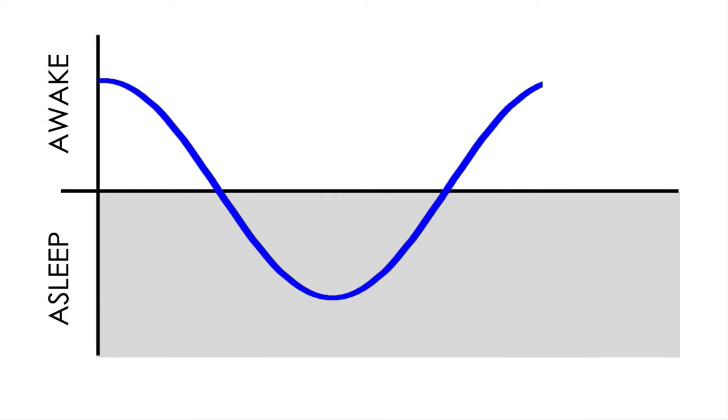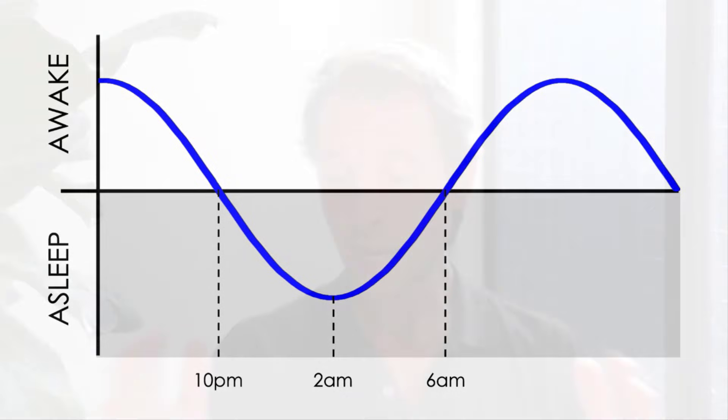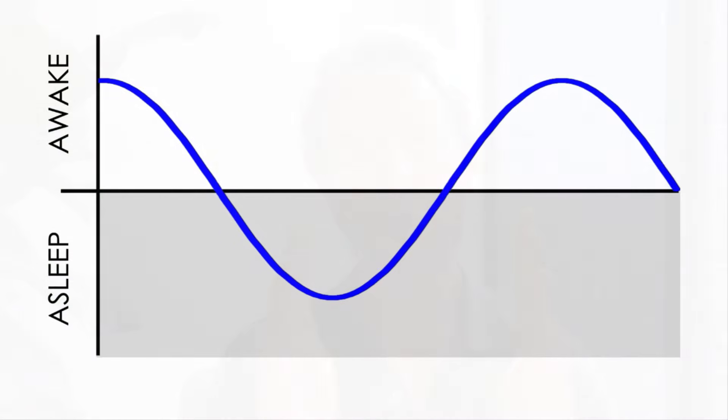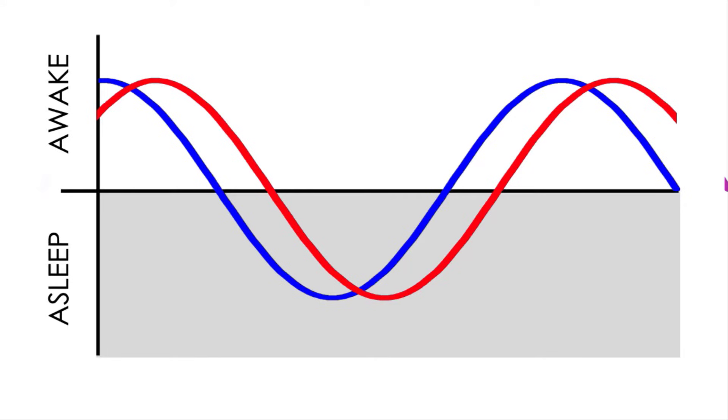Why would this matter? Because during adolescence something very interesting happens with sleep. Every human being has what's called their circadian rhythm — a 24-hour cycle of waking and sleeping. In most human beings we start to get tired around 8 p.m., we're asleep by 10, deep asleep by 1 or 2, and awake by 6. During the teenage years, this circadian rhythm shifts about 2 to 3 hours later, so teenagers don't even start to get tired till 10 or 11, and they're not into their deepest sleep till 4 or 5 — yet most of them still have to get up around 6 or 7 a.m. to go to school.